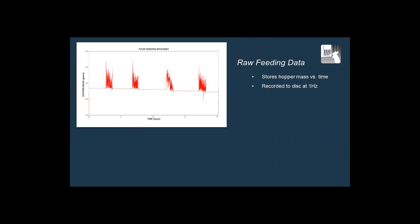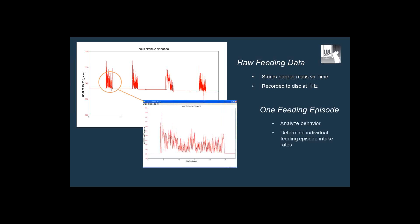Let's look at some actual raw data from the food intake sensors. What you're looking at here are four individual feeding episodes, and you're looking in particular at the mass of the hopper — about 340 grams. You can see that every time the animal feeds, it causes a large disturbance in the mass reading, which tells us it is interacting with the hopper, and you can see the mass of the hopper slightly declines after each of these feeding events. This is a close-up of one feeding episode so you can see what goes into it more clearly — this is the kind of raw data that the system saves.